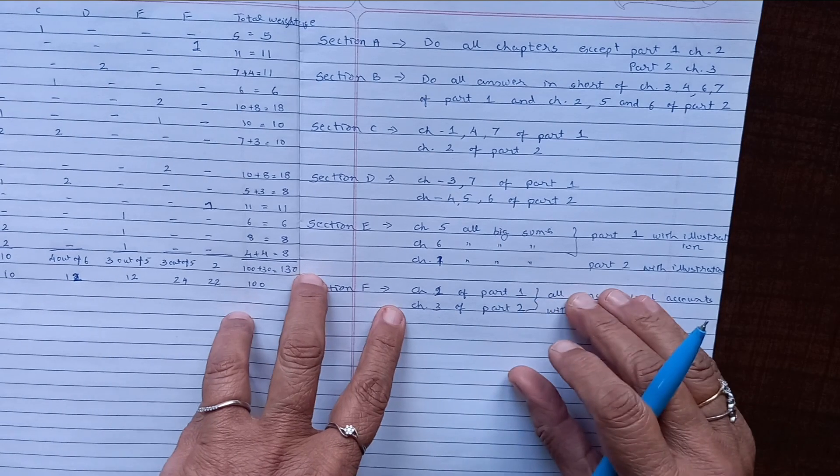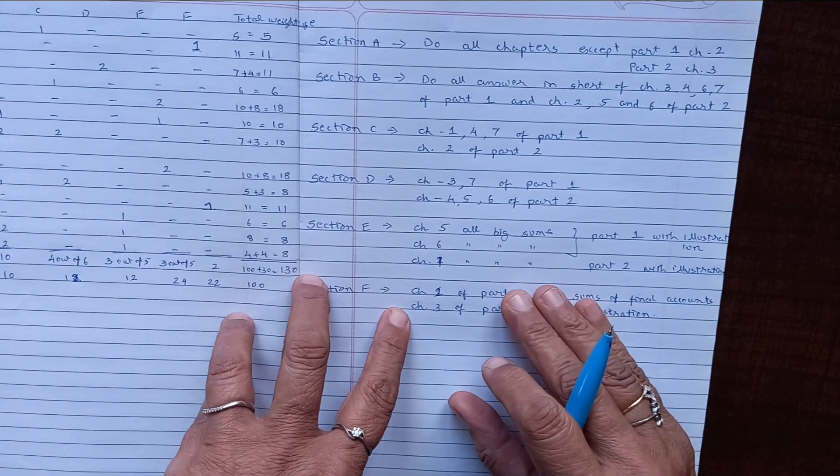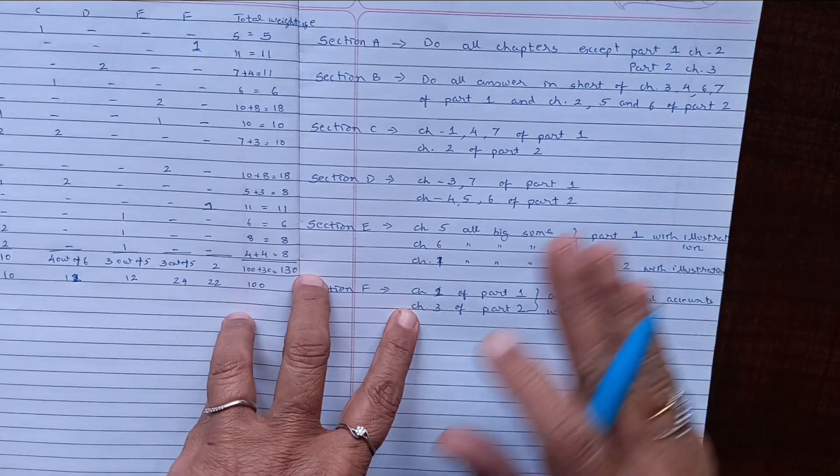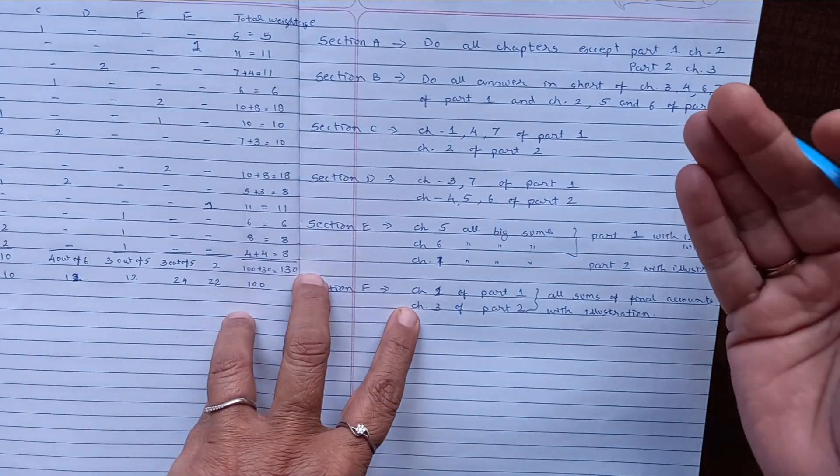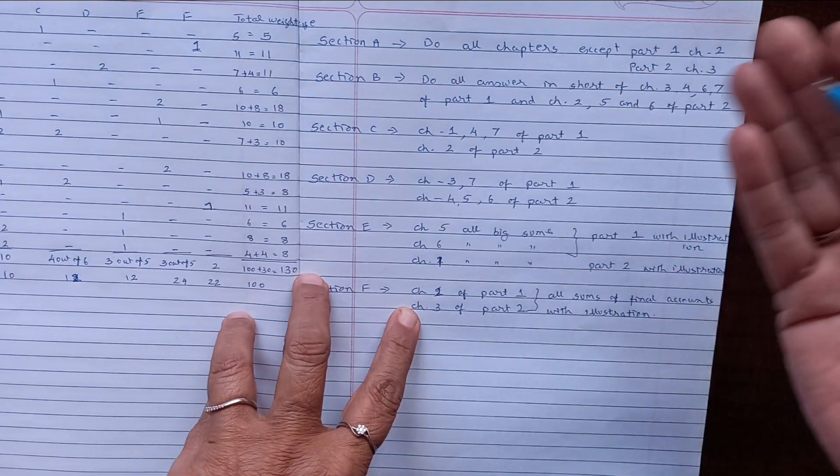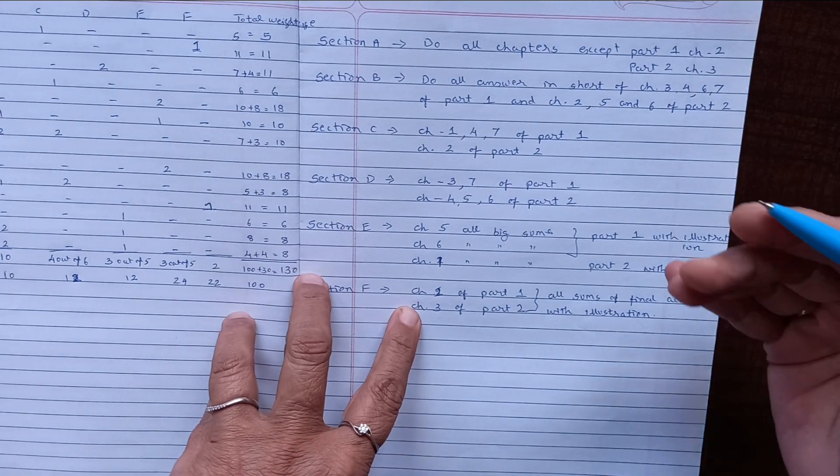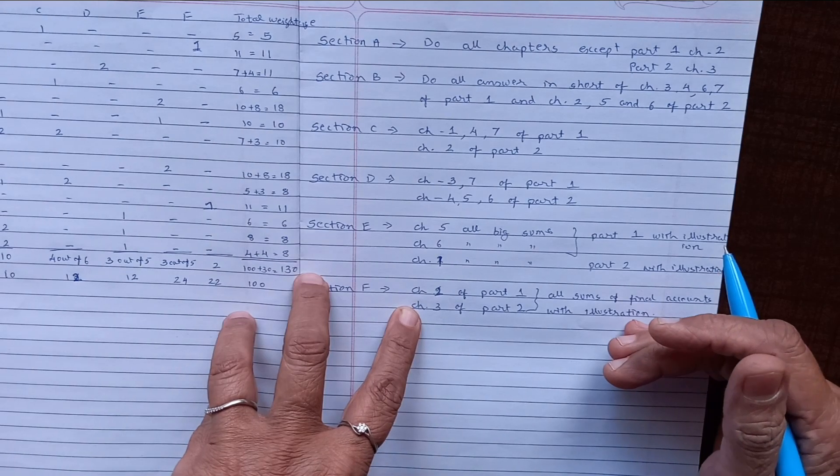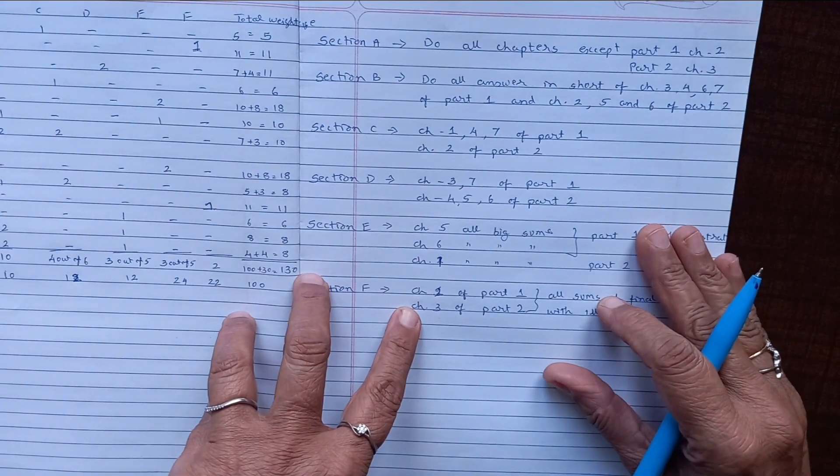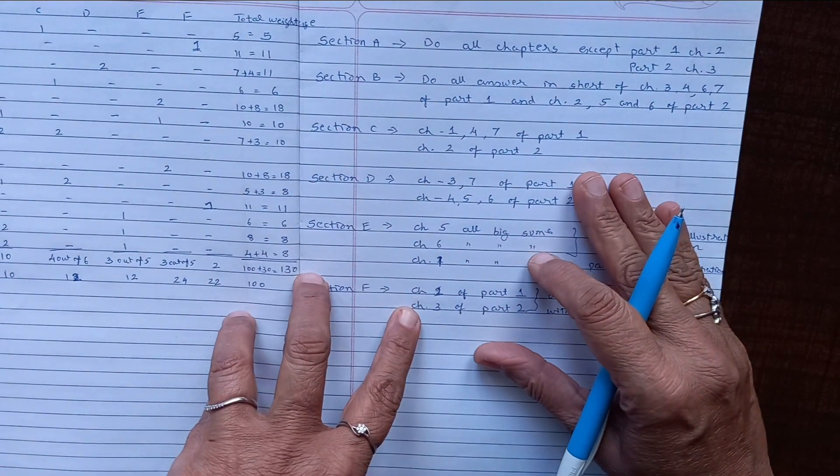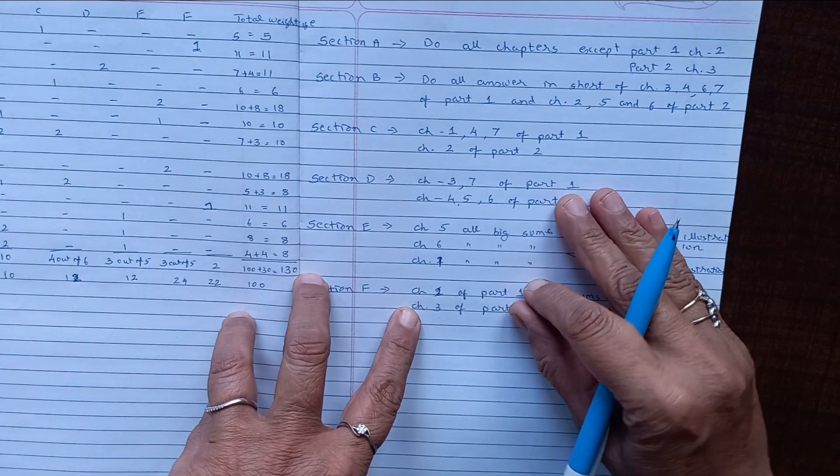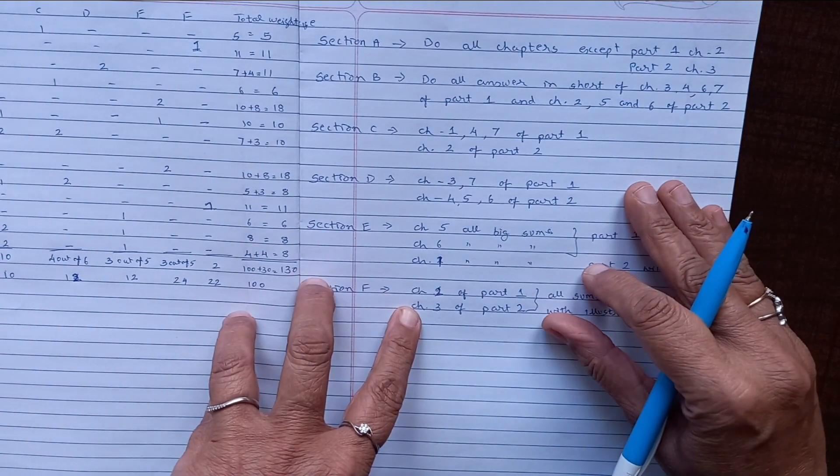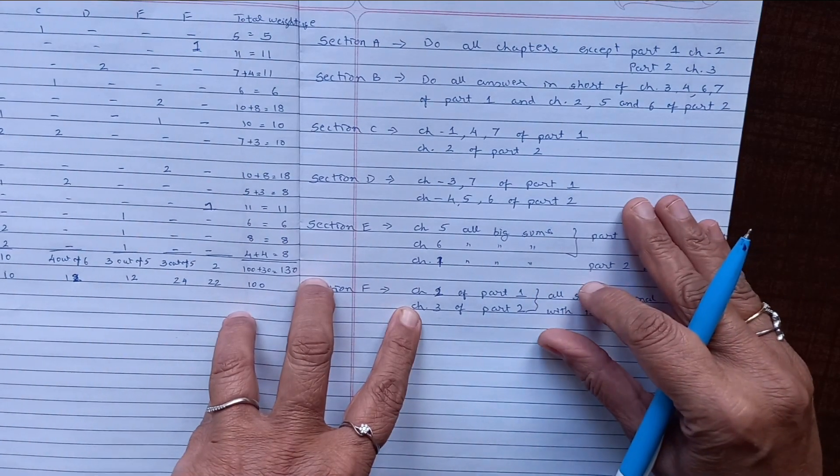The best way of revising final accounts is that you go through all adjustments first. You must know how to solve the adjustment. Any trial balance may be there; the important thing is how to handle those adjustments. So every example, all adjustments, you have to understand. Twofold effects to be understood. If more than twofold effects are there, that also to be understood.